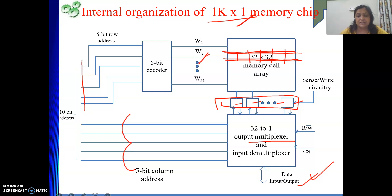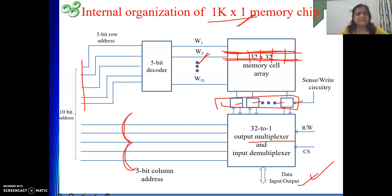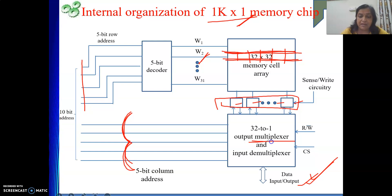The job of the multiplexer is to, out of 32, send the value of one particular cell on the data input/output line. From which particular column it will send is determined by the select lines of the multiplexer. So from 32 lines, it has to select only one — out of 32, from which particular cell the data will go is decided by the 5-bit column address. As a whole, we get a 10-bit address: 5 bits are utilized for selecting the row, then in the selected row all values are copied to the sense/write circuit, and the remaining 5 bits select the column. To select the column, we have one 32-to-1 multiplexer that selects one particular column's data on the data output line.